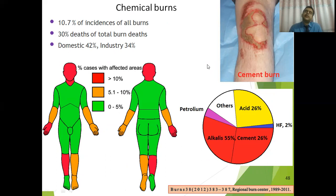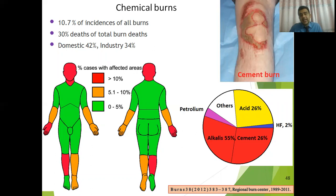Chemicals, especially corrosives, are the main source of chemical burns. Chemical burns are 10.7% of all burn incidents throughout the world, and they compose 30% of all deaths caused by burns. In domestic use, 42% of people are victims of chemical burns, and in industry, 34% of people are victims of chemical burns. In industry, safety measures are imposed on employees, and therefore the ratio of chemical burn accidents in industry is less compared to domestic use.